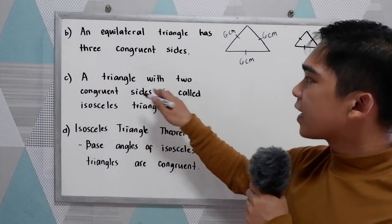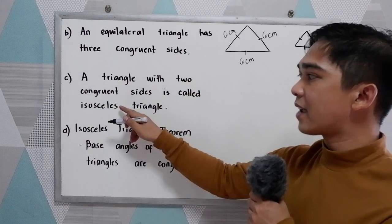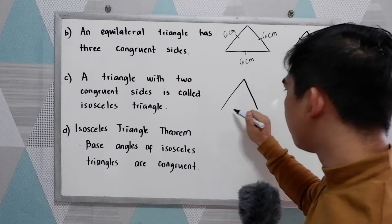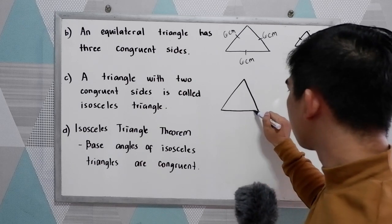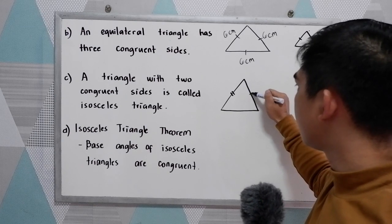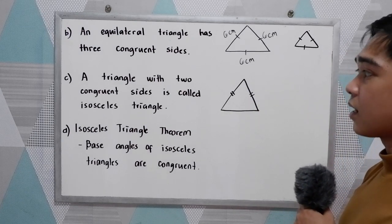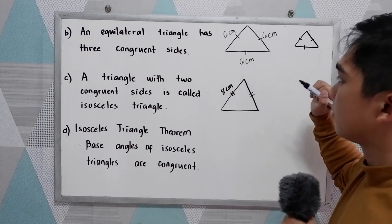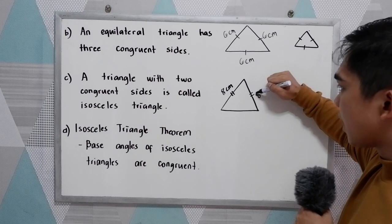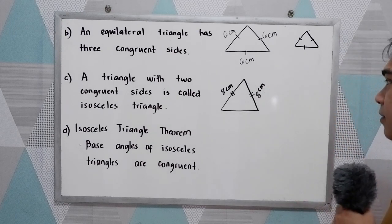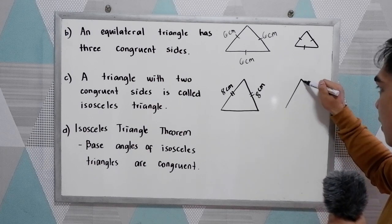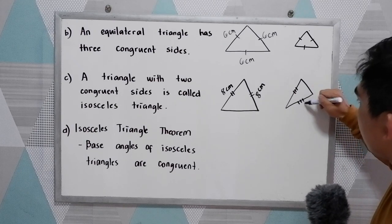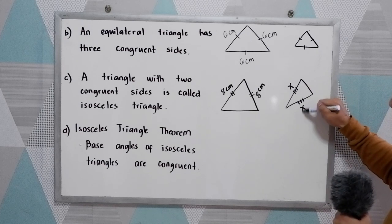Letter C: a triangle with two congruent sides is called an isosceles triangle. So, we have two congruent sides — let's say this side is equal to this one. If this is 8 cm, since that is an isosceles triangle, the other side is 8 cm also. If we have another triangle, let's say this side is equal to this side — if this is x, this also measures x.